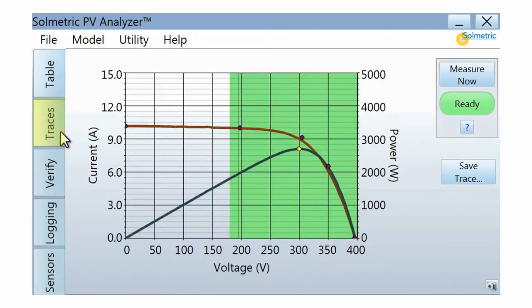The Traces tab displays the measured IV curve and the power curve. The five dots represent the predicted shape of the IV curve based on the detailed performance model.